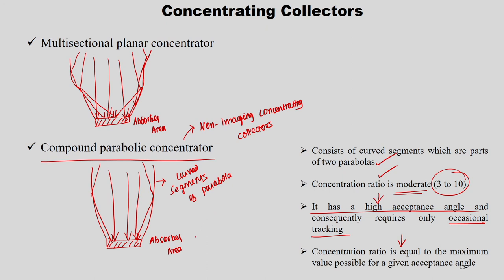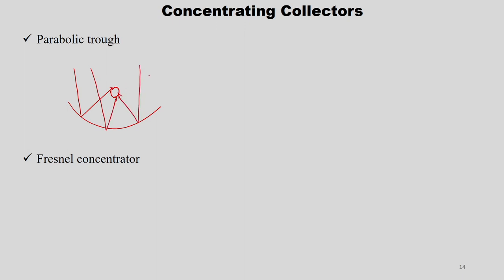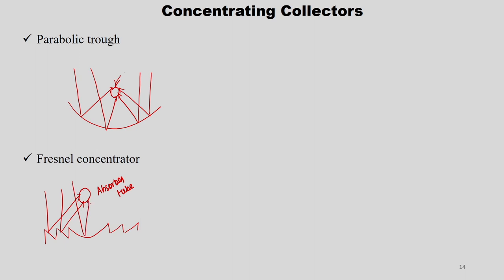The next type is the parabolic trough. After that is the Fresnel concentrator, where Fresnel mirrors are arranged so that radiation is reflected to the absorber tube above. The Fresnel mirrors are kept at one particular angle.